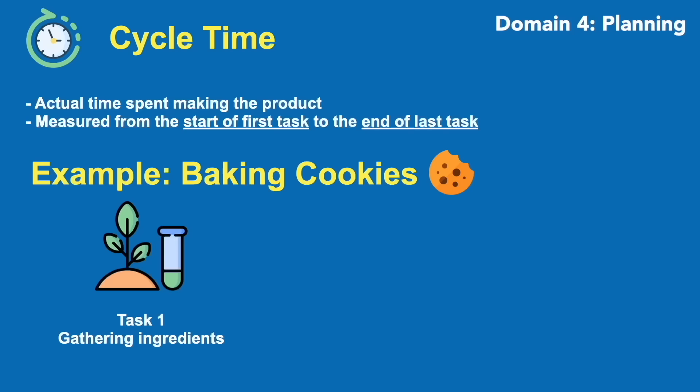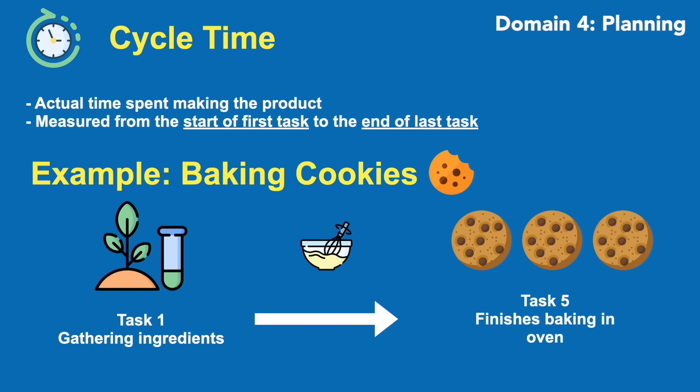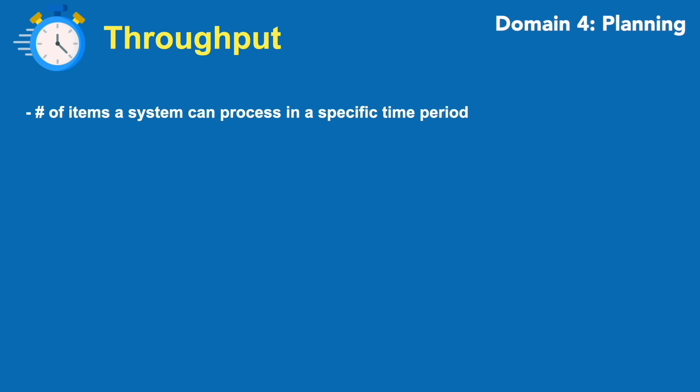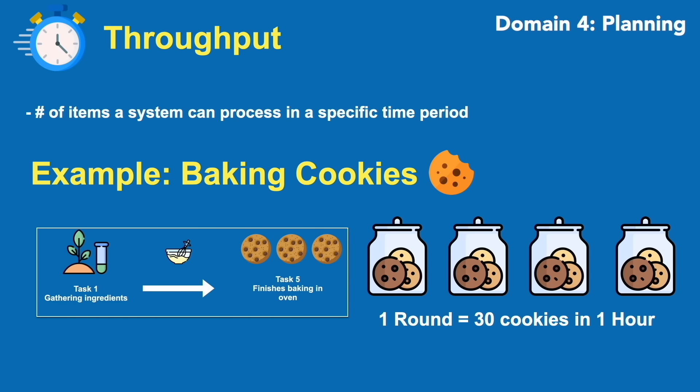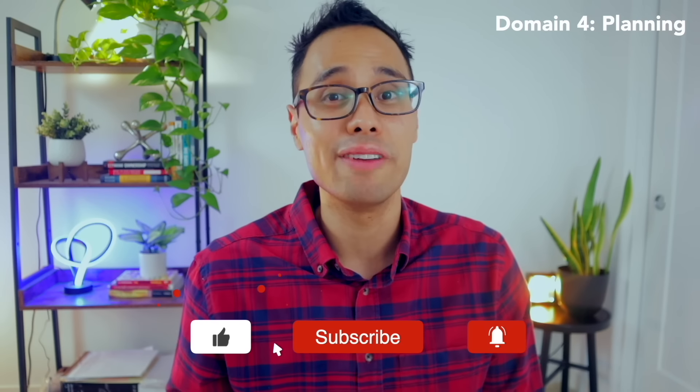For example, if you're baking a cookie through five steps, your cycle time is how long it takes from gathering and mixing the ingredients to when the cookie finishes baking. In the restaurant industry, cycle time could track the time from when an order is placed to when a customer receives a meal. Throughput, on the other hand, is the number of items a system can process in a given amount of time — for example, one round of the baking process lasting about one hour generates a throughput of 30 cookies per hour.